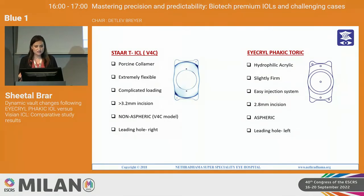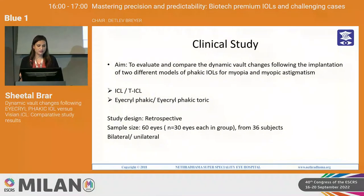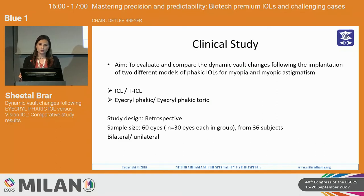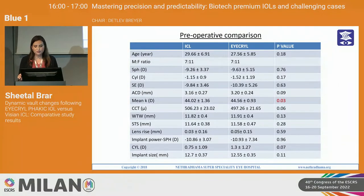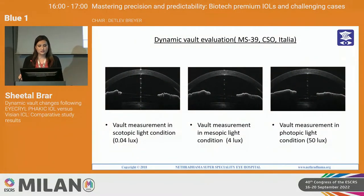The known differences between the two comparator lenses: the ICL's Collamer material is much softer and flexible, whereas the iCryl Phacic lens is hydrophilic acrylic material — slightly stiffer. This is why we thought it would be interesting to see how the vault changes with the two implants. The aim was to evaluate and compare the dynamic vault changes following implantation of two different models of phacic IOLs for myopia and myopic astigmatism — ICL versus iCryl Phacic — including the toric models of both. The study design was retrospective, consisting of 60 eyes from 36 subjects with 30 eyes in each group.